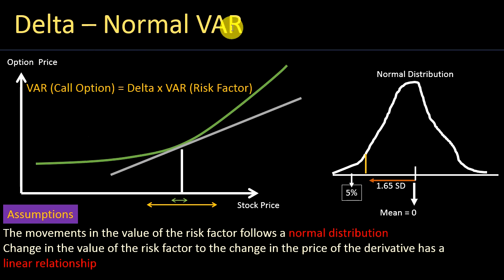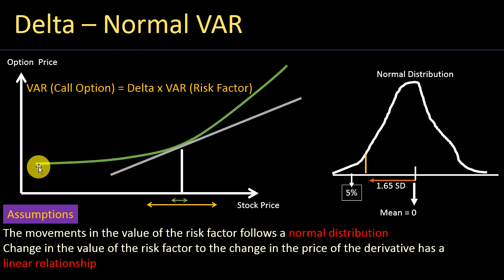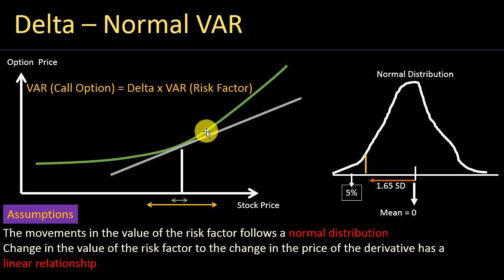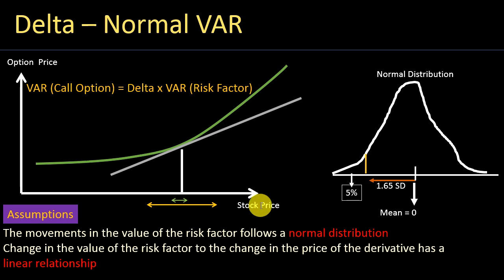When we use the delta normal value at risk, we assume the movements in the value of the risk factor follow a normal distribution. For example, consider a call option — the green curve shows the relationship between the option price and the underlying risk factor, in this case the stock price. You can see that as the stock price changes, the option price changes, and the relationship is not linear — it's a curve, not a straight line.